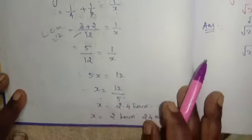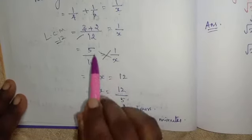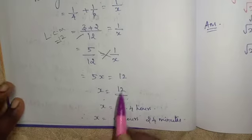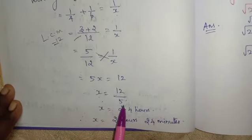5 by 12 is equal to 1 by X. Cross multiply: 5X is equal to 12. X is equal to 12 by 5.